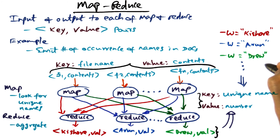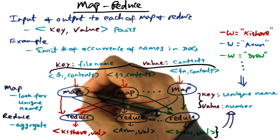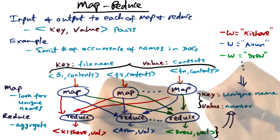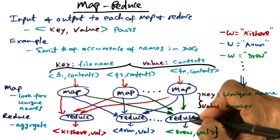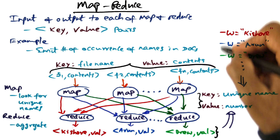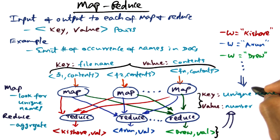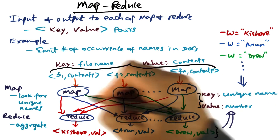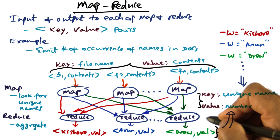Beyond that, the app developer does not have to worry about how many instances of mappers or reducers to create, nor about the plumbing from the output of the mappers to the input of the reducers. All of those details are handled by the MapReduce programming environment automatically.